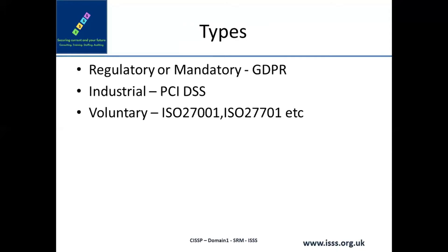Compliance is of three different types. First, there is regulatory or mandatory compliance. Regulation is law — you have to abide by it. If you don't, there is a penalty or it might even lead to cancellation of your license to operate. Mandatory compliance examples include GDPR, which is for the European region, HIPAA, and India's upcoming PDPB — the Personal Data Protection Bill — which is aligned with GDPR.